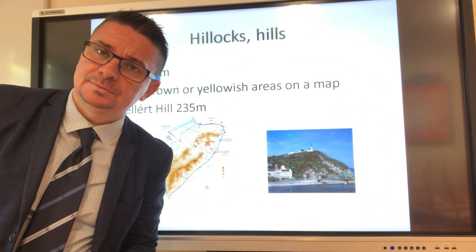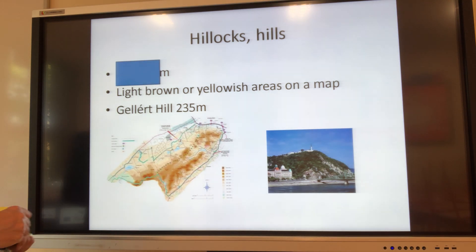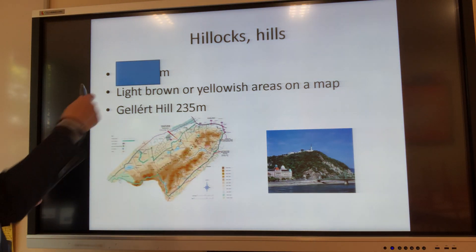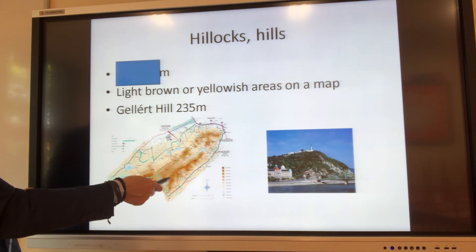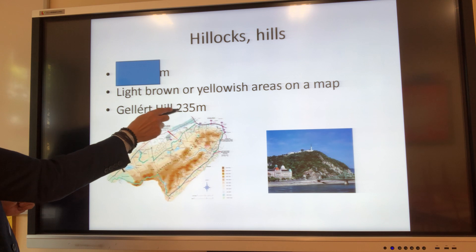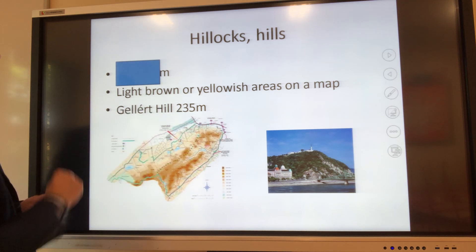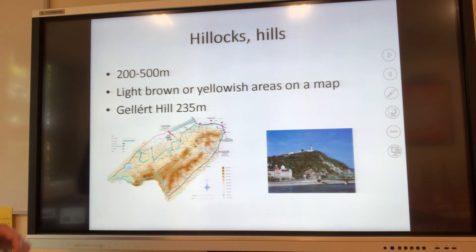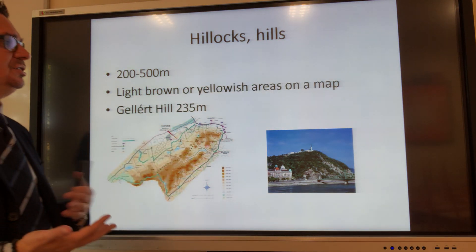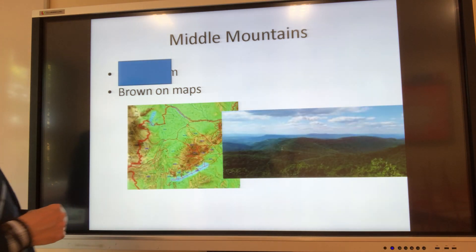Now next part. If you stopped the video, you can continue with me now. Hillocks and hills — like Gellért Hill. It's tall but it's not that tall. How tall are these and what is the color? The color can be seen here — light brown or yellowish on a map. And Gellért Hill is over 200 meters, so you can see that it's a very good example. They are between 200 and 500 meters, so not taller than 500 meters. This is a category which can help people in everyday life when they want to symbolize something on a map.